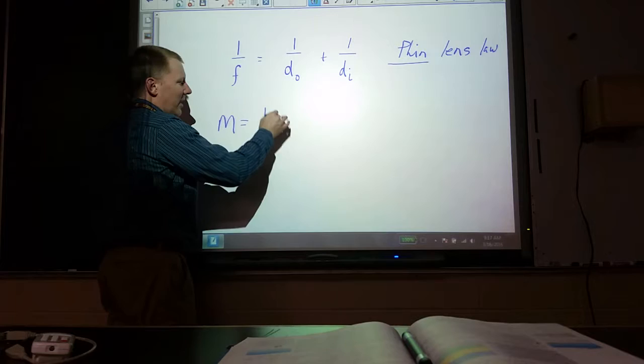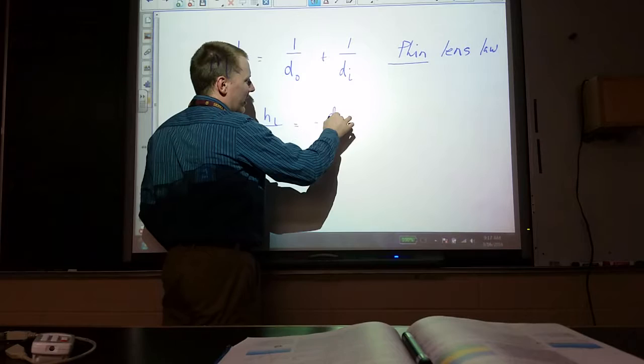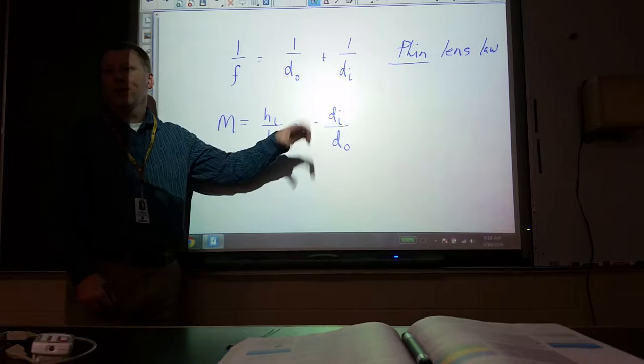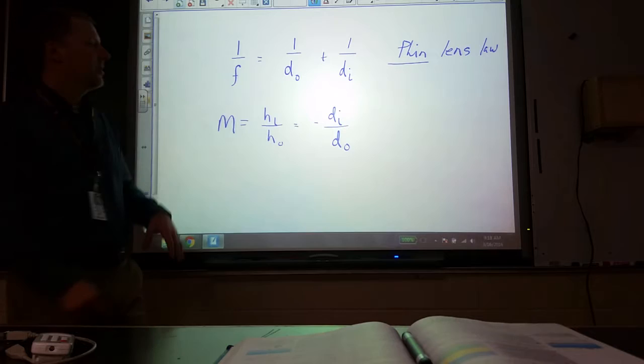Also, you found magnification looks very similar. It would be the height of an image over the height of the object as always. And that turns out in the same way as before. Mirrors. To be negative one times the image distance over the object's distance. And just like before, this negative means that if magnification is negative, the image is inverted. It's upside down.